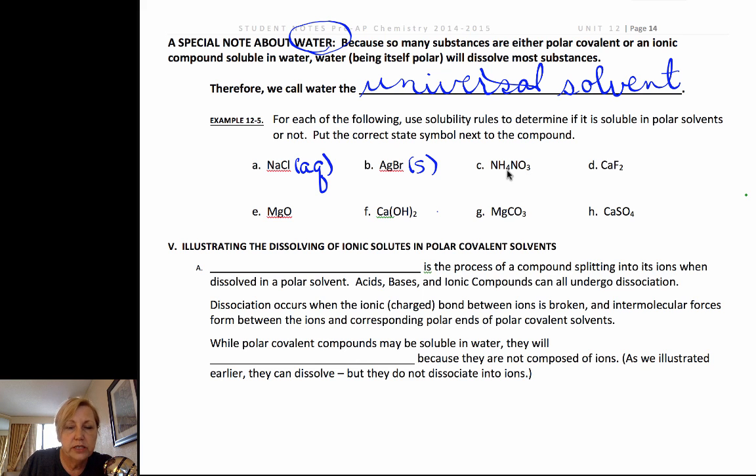Ammonium all are soluble without exception and all nitrates are soluble without exception. So that's going to be an aqueous. Now if you look at the fluoride rule you'll see that many of the fluorides are soluble with a few exceptions and calcium is one of the exceptions that is not soluble or it would form a solid precipitate.